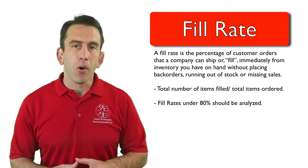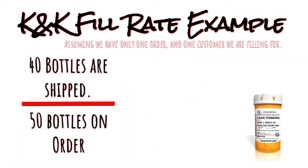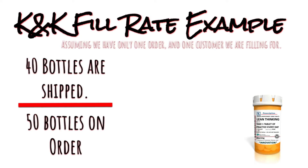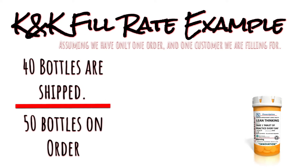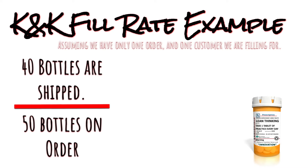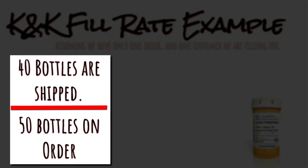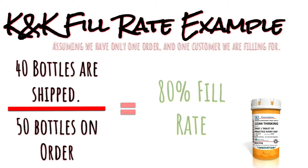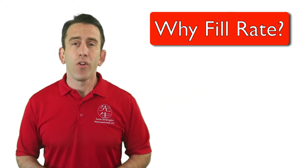Let's look at an example. Assuming we have only one order and one customer we are filling for, let's imagine that K&K Manufacturing has an order to fill 50 bottles of a powerful prescription medication. K&K is only able to ship 40 bottles of the medication. To get K&K's fill rate, we divide 40 bottles shipped by the complete order of 50 bottles. K&K's fill rate is 80%.